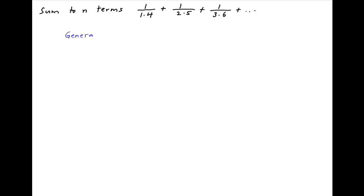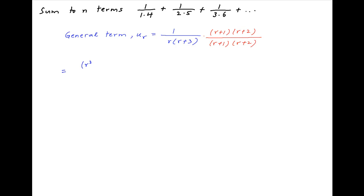The general term of the given series, let's denote it by u_r, is equal to 1 upon r times (r + 3). Now multiply and divide by (r + 1) times (r + 2). Therefore, u_r is equal to (r² + 3r + 2) divided by r times (r + 1) times (r + 2) times (r + 3).